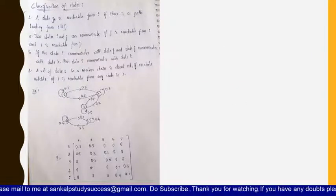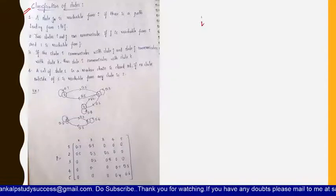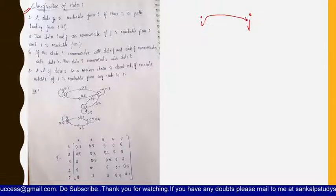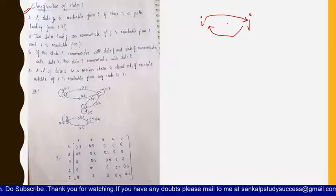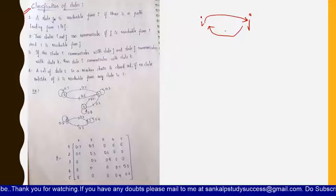Classification of states: a state j is reachable from i if there is a path leading from i to j. That means if there are two states i and j, and if there is a path moving from i to j, then you can say that j is reachable from i. Also, if there is a path from j to i as well,